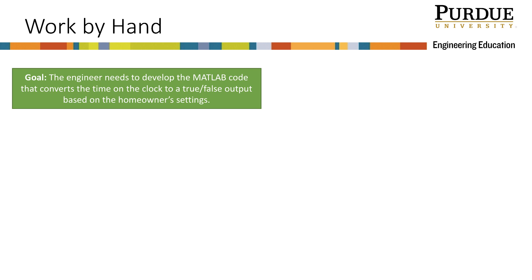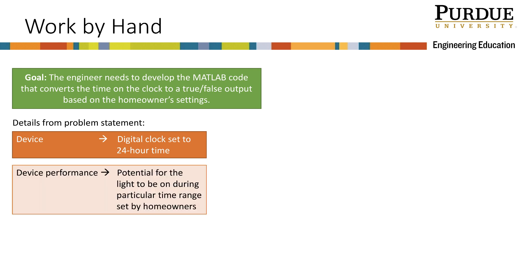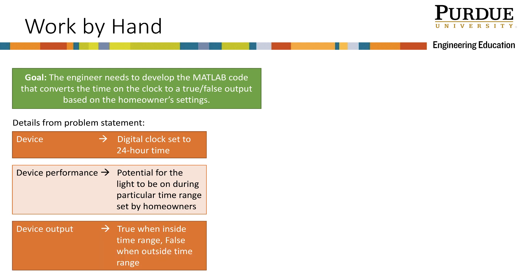Now let's try to work this by hand. Thinking back to the problem statement, we are coding the performance of the digital clock. The digital clock is set to display 24-hour time rather than a 12-hour clock using AM and PM. It needs to work with the other devices such that the light fixture has the potential to be on during a time range set by the homeowners, outputting true when the clock is within the set range and false when outside.